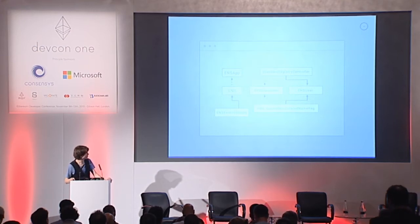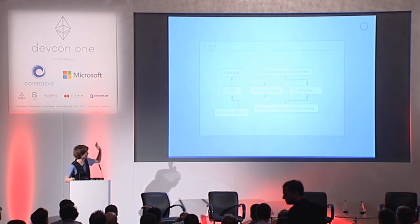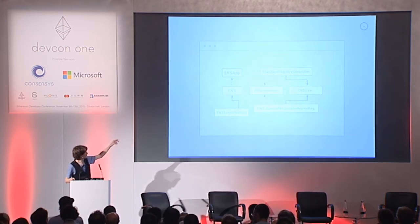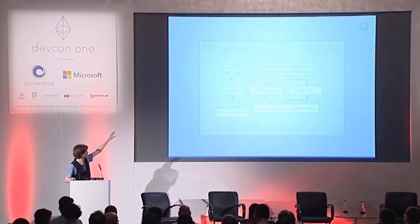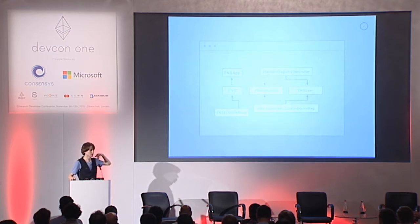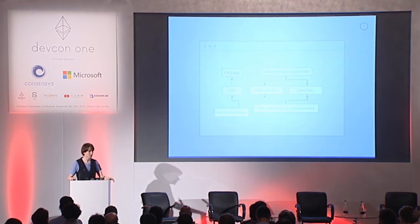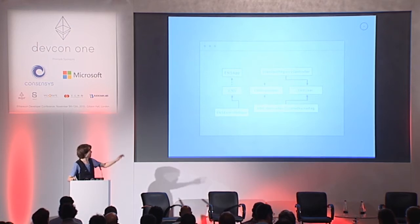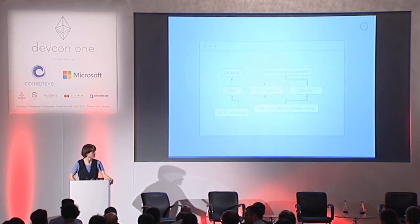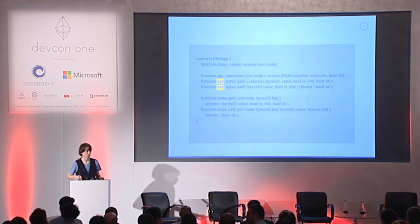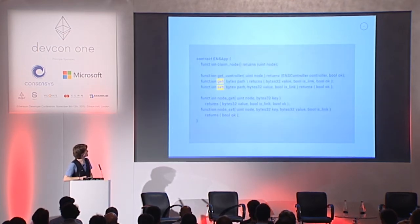This is roughly what our code looks like right now — this is a UML diagram. You can see there are two distinct structures. The one on the left is governed by the ENS app interface on the top, and that is what you'll be interacting with most of the time. It lets you get and set values in the ENS tree using paths. The second structure you'll only use if you're setting permissions on a node.